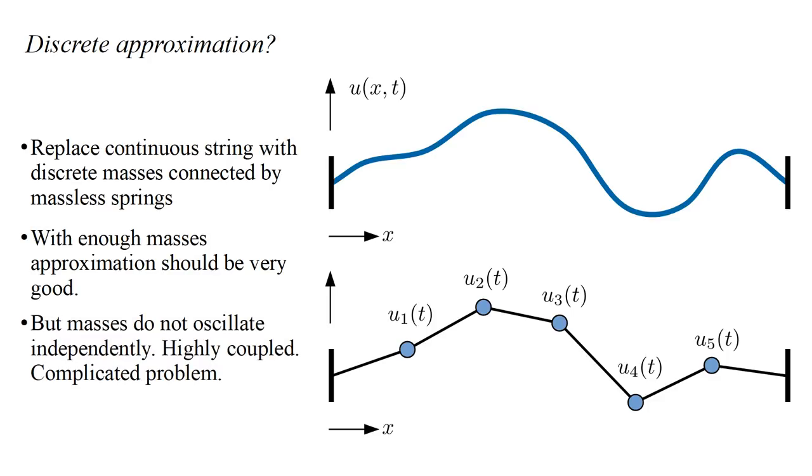Unfortunately, these masses do not oscillate independently. When one moves, it pulls on both of its neighbors. So, their motion is highly coupled. In the chemistry video of the quantum mechanics series, we saw how difficult it is to treat a quantum system of many coupled particles. So, this seems like a dead end.